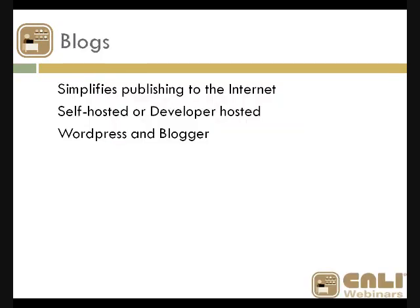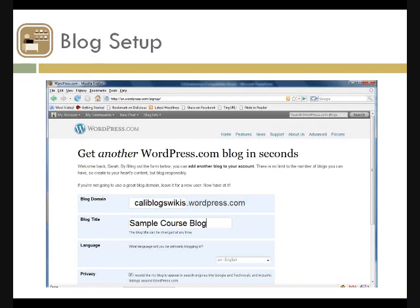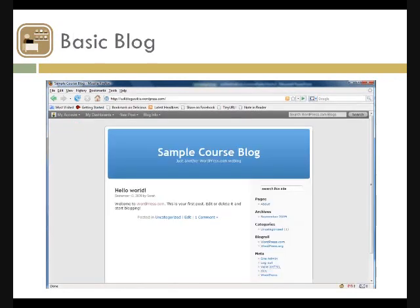The other option is blogs. Everyone knows what a blog is — it's a very simplified way of publishing to the internet. You can self-host or use a free hosted service. The two main ones I've used are WordPress, which is open source, and Blogger, owned by Google. I'm using WordPress for this demonstration. You set up your account, create as many blogs as you want, set up your domain name and title, and you have a blog.